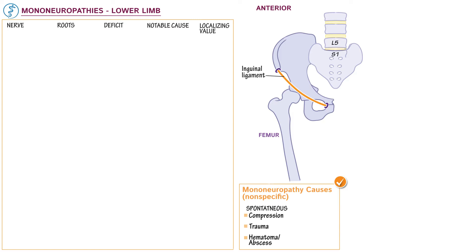Then list the following iatrogenic causes: surgery with direct or indirect nerve injury, accidental neuralgia from nerve block, and accidental nerve injury from intramuscular injection. Now let's look at the specific nerves and some specific causes of lower limb mononeuropathies.